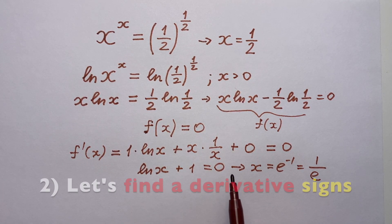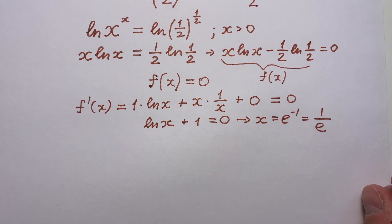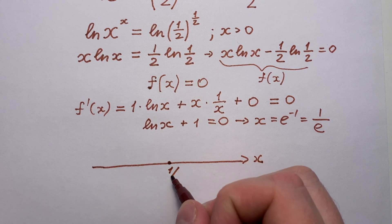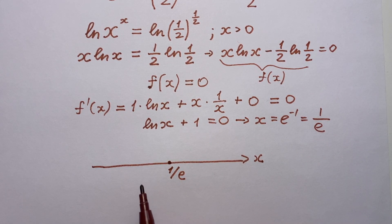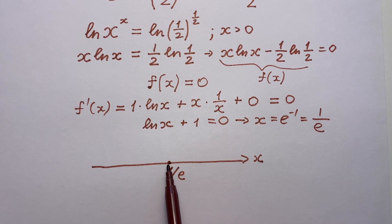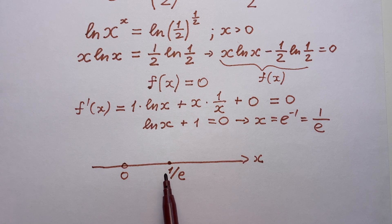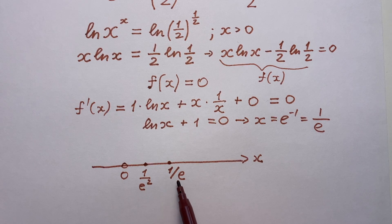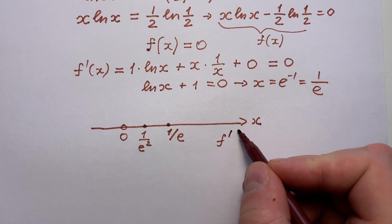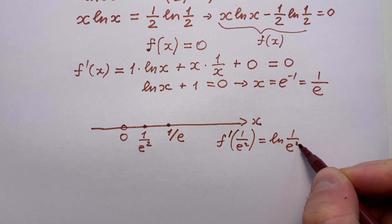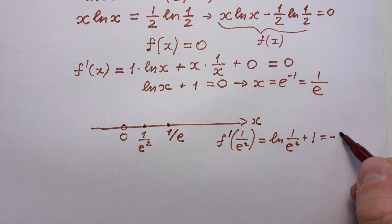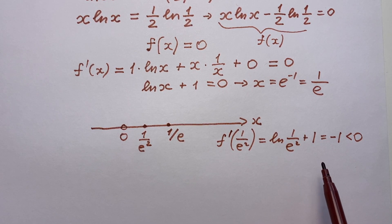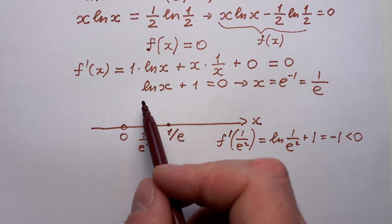Now let's make the second step: find the derivative signs. Let's draw this point on the x-line. Here we have one divided by e, our extremum point. Let's find the derivative sign to the left and to the right of our stationary point. What point lies between zero and one divided by e? We can take one divided by e squared. At that point, the derivative equals natural logarithm of one over e squared plus one, which equals minus one, and it's less than zero. So to the left of our extremum point, the function is decreasing.